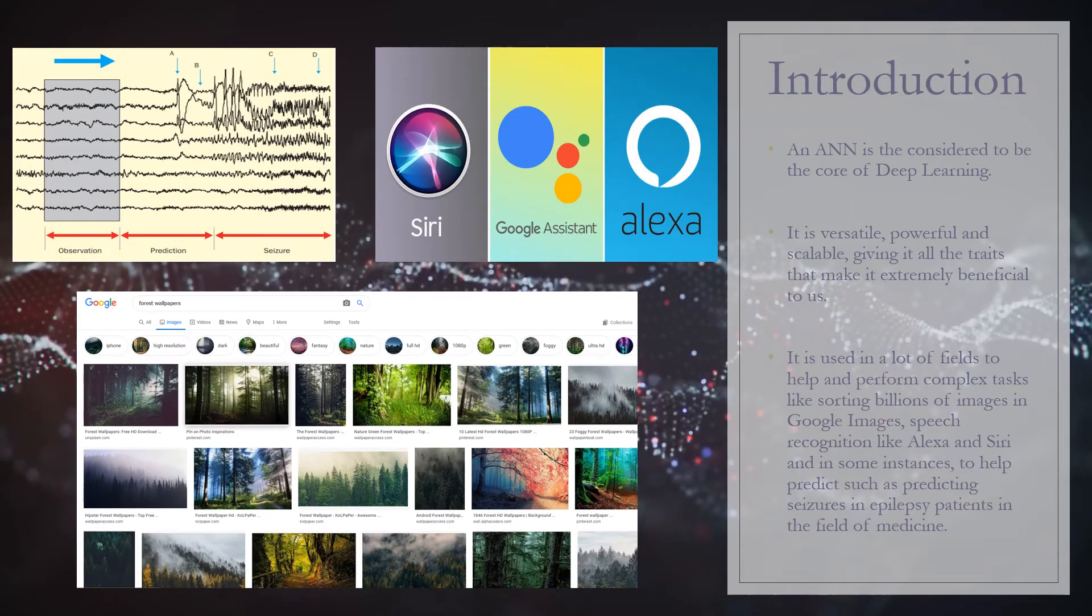Artificial neural networks are considered the core of deep learning. They are very powerful, versatile, and scalable, which is what you might want as traits for something to be able to finish complex machine learning tasks such as classifying billions of images on Google Images.